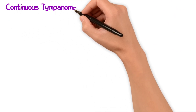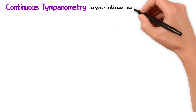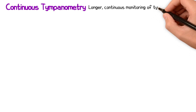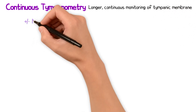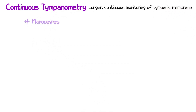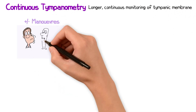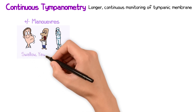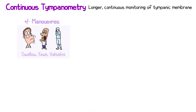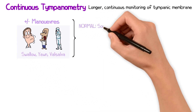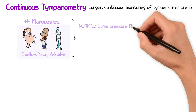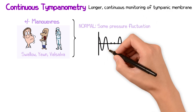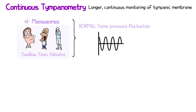Continuous tympanometry is an extended form of traditional tympanometry in which the compliance of the tympanic membrane is continuously monitored over a longer period, often while the patient performs certain manoeuvres such as swallowing, yawning, or performing a Valsalva manoeuvre. In a normative population, there should be some fluctuation in compliance as pressure changes induced by these movements are conducted to the middle ear.